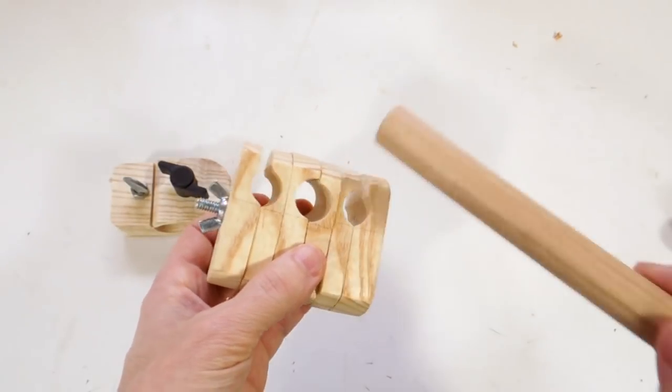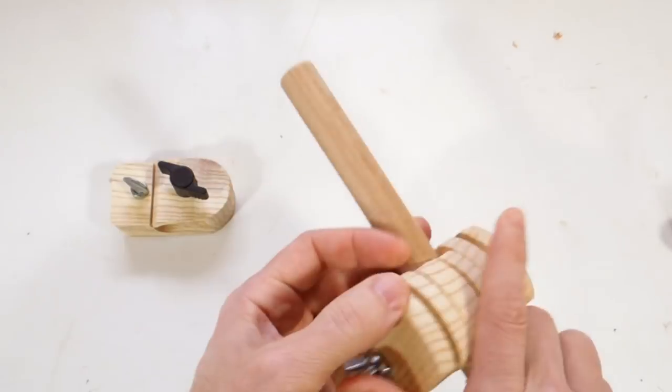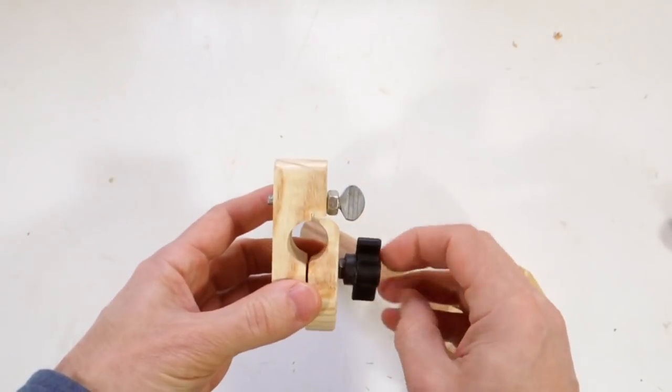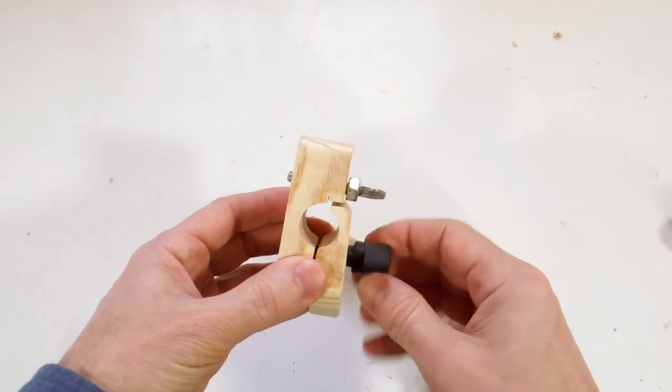Now through here fits a dowel, and that attaches to this bracket here. And that locks onto the dowel if I tighten that knob.